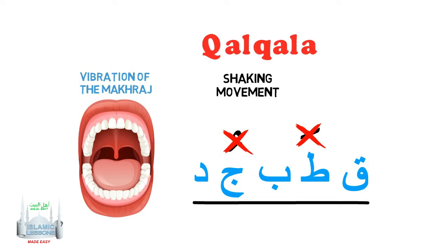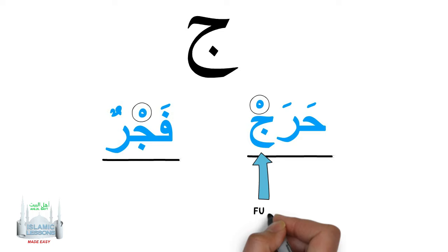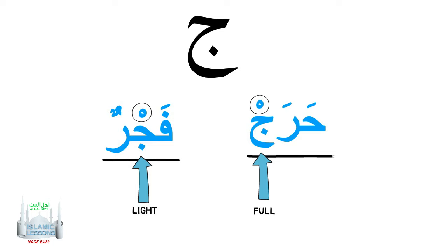You shouldn't pronounce them so much that a fatha or a dhamma is sounded. Some have said that there are a few types of Qalqala and they have levels. The Qalqala letters at the end of a word should be pronounced with full Qalqala, and the ones in the middle should be pronounced a little softer. Get familiar with this rule first, and then you can advance onto the different types of Qalqala.